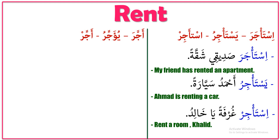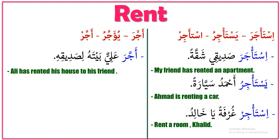Past tense of ajara: 'ajara Aliyyun baytahu lisadiqihi' — meaning 'Ali has rented his house to his friend.' If you hear only 'ajara Aliyyun baytahu,' it means he rented his house to someone. The addition of 'lisadiqihi' clarifies it was to his friend.